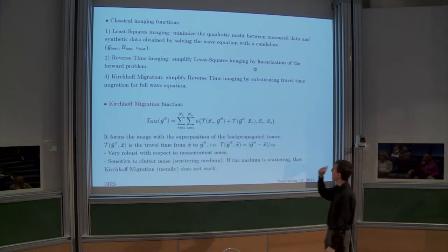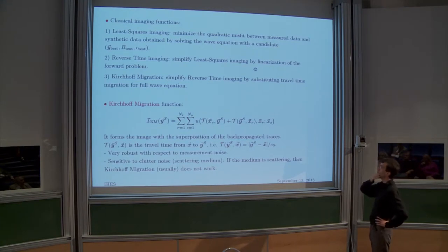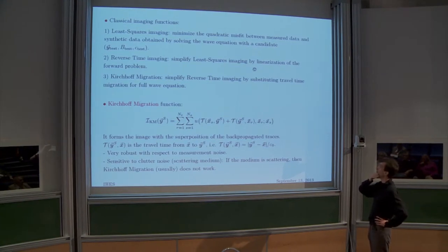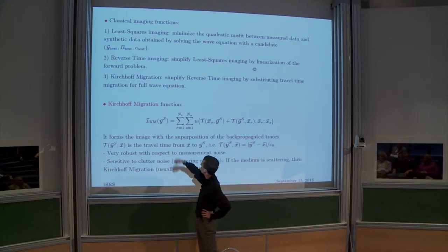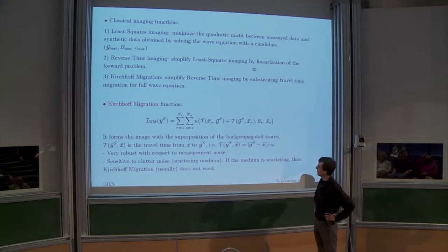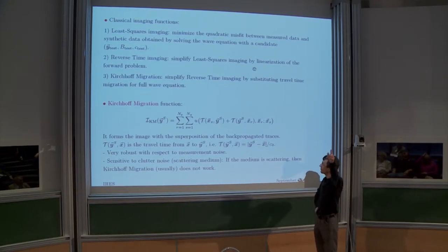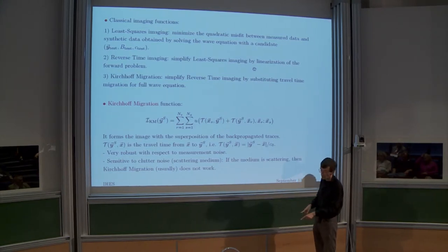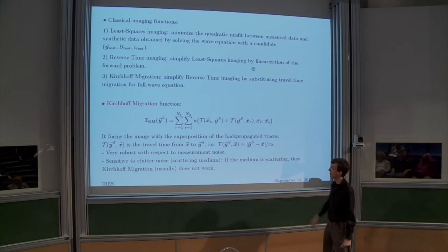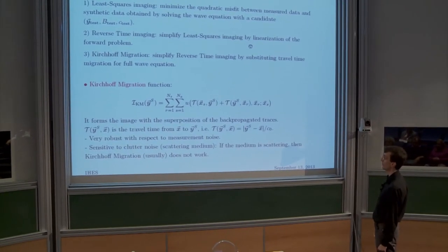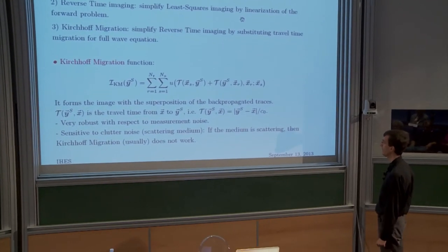Kirchhoff is very simple — that's why practitioners like it. For each search point ys, you evaluate the data at the sum of travel times from the source and receiver: the time it takes to go from the source to the search point and back to the receiver. That formula is very easy to implement. And in fact, it's not so bad — it has good resolution properties and fine detail.